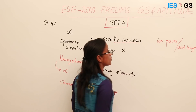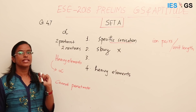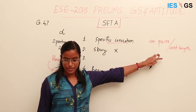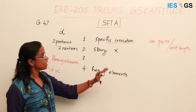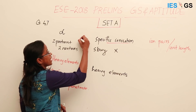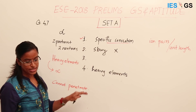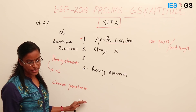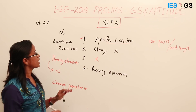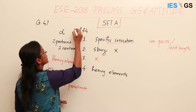Specific ionization is the number of ion pairs that the particle produces per unit length while traveling through a medium. Alpha particles have very high specific ionization, so statement 1 is correct. Statement 2 is wrong, and statement 3 — that they can penetrate the outer layer of human skin — is also wrong. Therefore, the correct statements are 1 and 4, and the answer is option A.